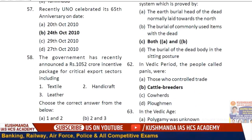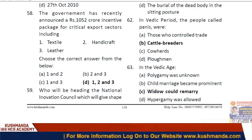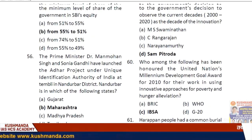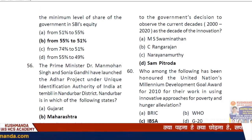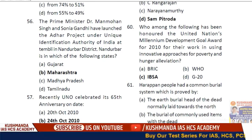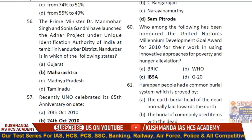Question 56: UNO celebrated its 65th anniversary — option B — 24th October 2010. Question 57: The government announced 1,052 crore rupees in incentives package for critical export sectors including option D — textiles, handicrafts, and leather. Question 58: The National Innovation Council, observing 2010–2020 as the decade of innovation, will be headed by option D — Sam Pitroda. Question 59: The UN Millennium Development Goals Award for 2010 for innovative approaches to poverty and hunger eradication went to option C — IFPRI.